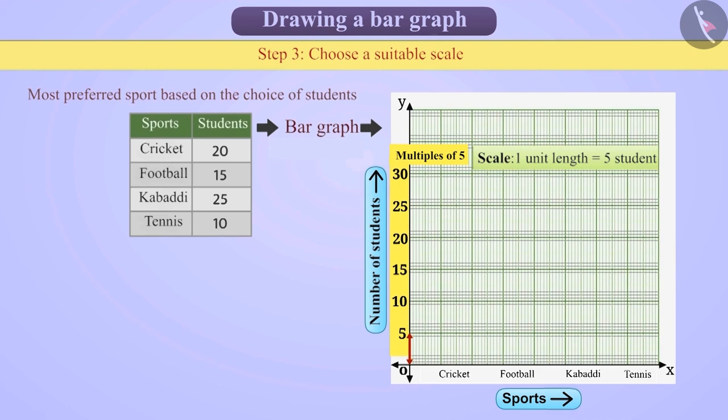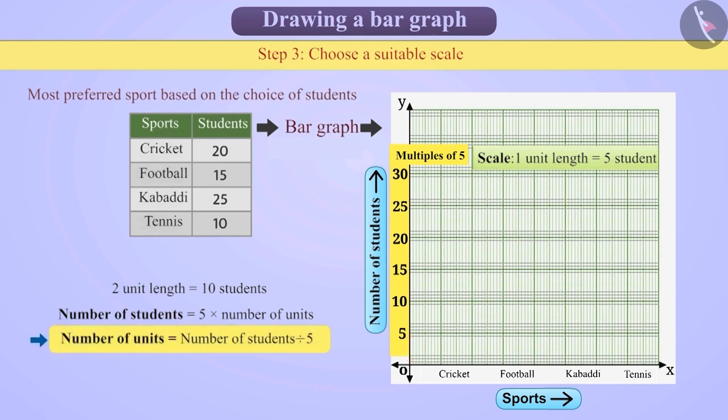The length of 2 units represents 10 students. Therefore, the number of students can be calculated by 5 multiplied by number of units. With this, we can also find the number of units by dividing the number of students by 5, which is the length of the bar.